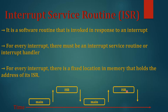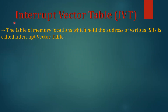Now let's talk about the Interrupt Vector Table. The Interrupt Vector Table is a table of memory locations which hold the address of various Interrupt Service Routines. There can be multiple interrupts in a microcontroller, and for all those interrupts there will be Interrupt Service Routines. Those Interrupt Service Routines are associated with specific memory locations, and the collection or table of all those memory locations is called the Interrupt Vector Table.